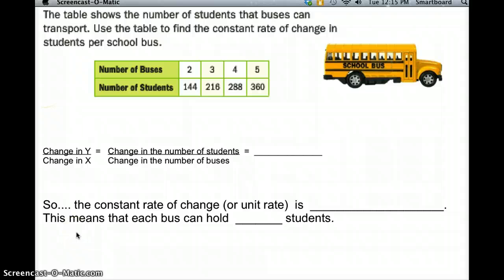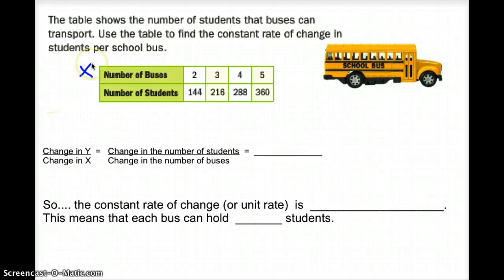In this example, the table shows the number of students that buses can transport. We're going to use the table to find the constant rate of change in students per school bus. You'll notice the chart is not labeled x and y, so I will do that for you. We're going to label this x, and we're going to label this y.